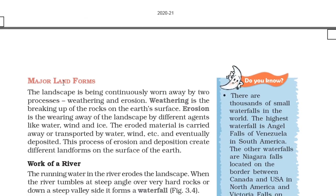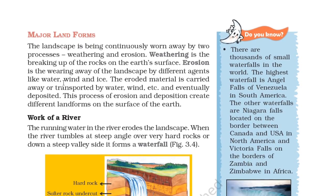Major landforms: the landscape is being continuously worn away by two processes — weathering and erosion. Weathering is the breakup of rocks on the earth's surface. Erosion is the wearing away of the landscape by different agents like water, wind, and ice. The eroded material is carried away and transported, and eventually deposited. This process of erosion and deposition creates different landforms on the surface of the earth.